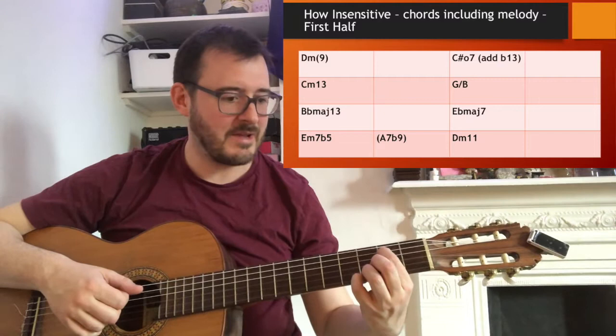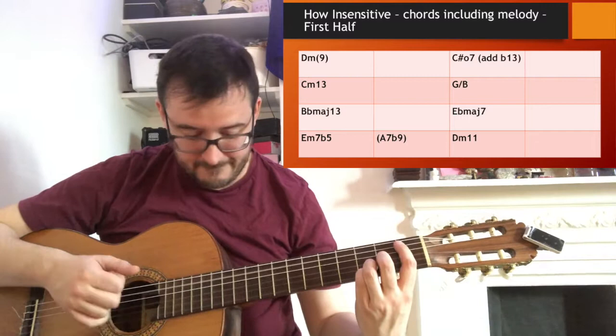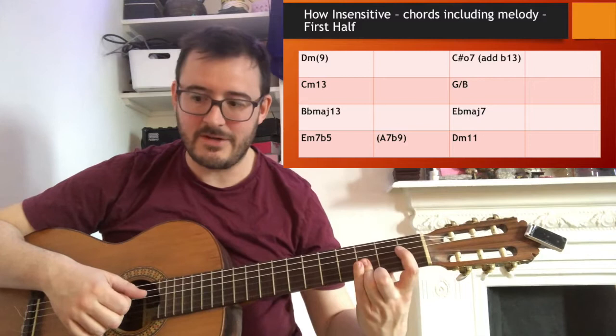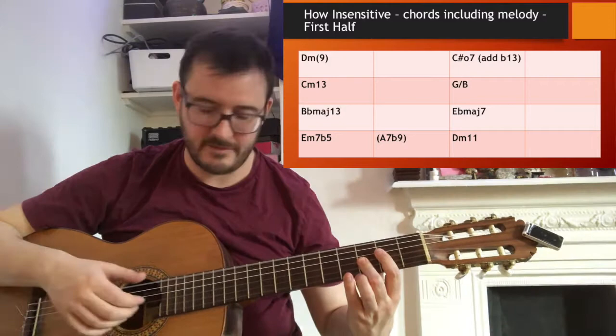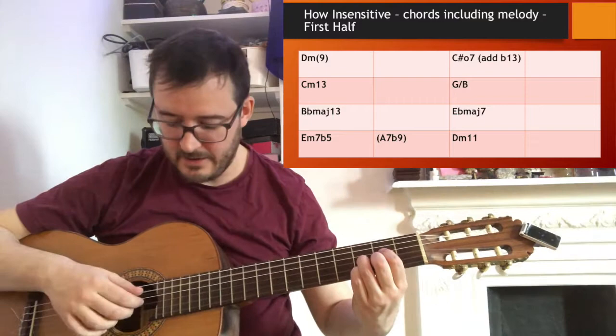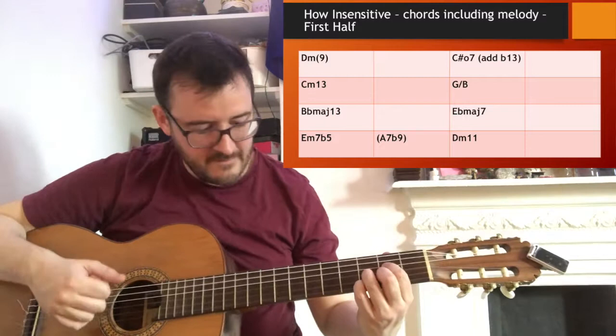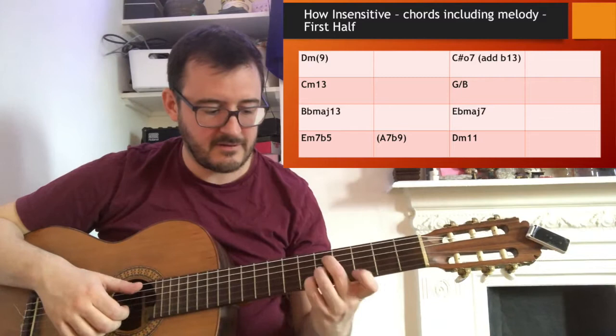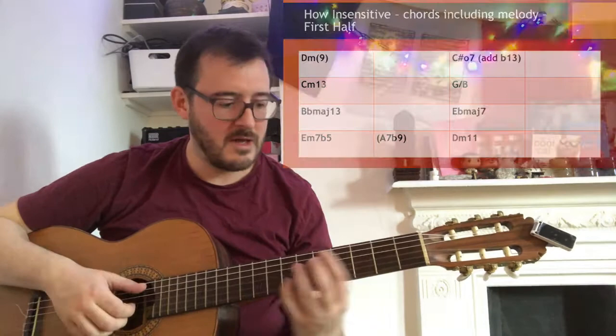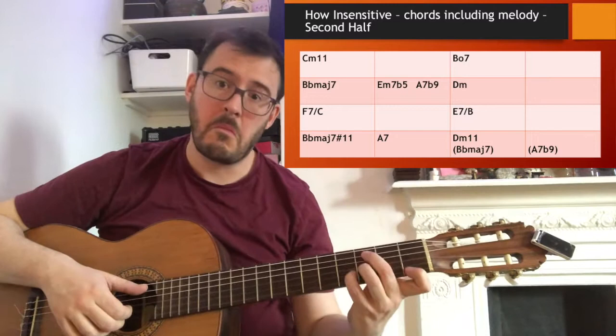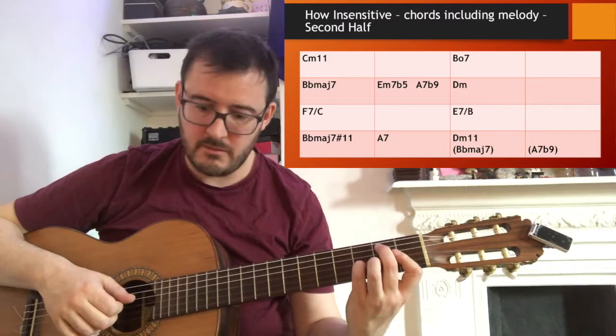And then we get a B-flat major thirteenth chord, which is not that usual — major thirteenth chords are rare. And an E-flat major seventh. Then I go up a semitone to an E half-diminished. And I'm playing a flat nine under the seventh there, so it's just that diminished seventh shape on top of an A bass. And then we go down to the F with the D in the bass. Then C minor eleventh here — I don't play that middle chord. B diminished is fine there.